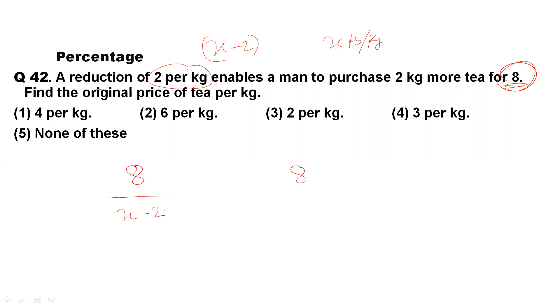At x minus 2 rate, he will get some quantity. At x rate, he gets some quantity. The gap in quantity is equal to 2 kg.